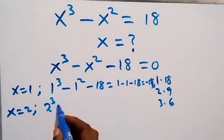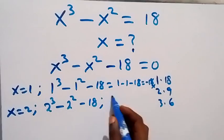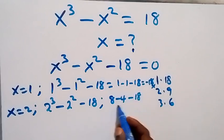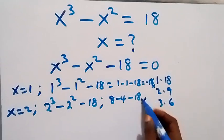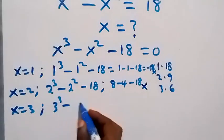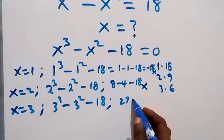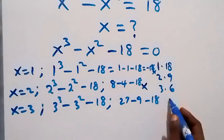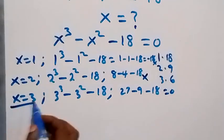For x=2: 2³ - 2² - 18 = 8 - 4 - 18 = -14. That is not zero, so 2 is not a root. For x=3: 3³ - 3² - 18 = 27 - 9 - 18 = 0. So x=3 satisfies the equation.